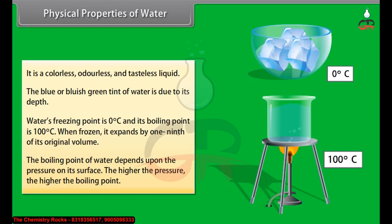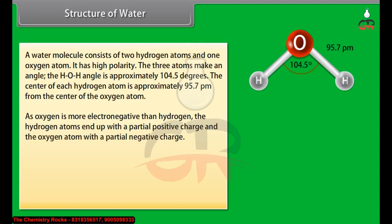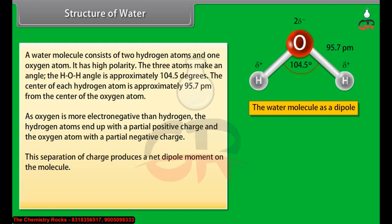Structure of water: a water molecule consists of two hydrogen atoms and one oxygen atom. It has high polarity. The three atoms make an angle - the H-O-H angle is approximately 104.5 degrees. The center of each hydrogen atom is approximately 95.7 picometer from the center of the oxygen atom. As oxygen is more electronegative than hydrogen, the hydrogen atoms end up with a partial positive charge and the oxygen atom with a partial negative charge. This separation of charge produces a net dipole moment on the molecule.